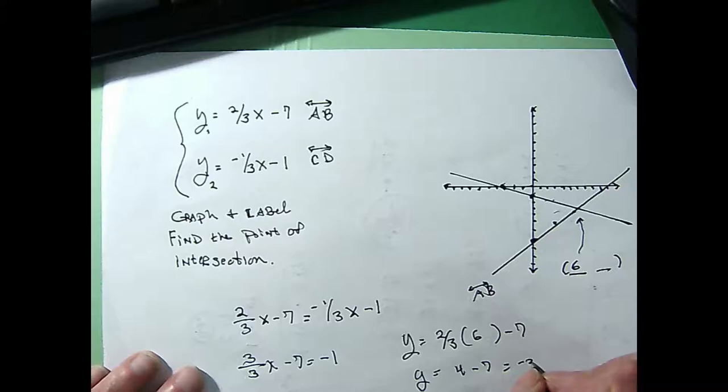So that place would be at (6, -3). So if anybody ever jumps out of a taxi cab and says, how do you find the place where these two lines intersect each other? I'm going to let you tell them. You set them equal to each other.